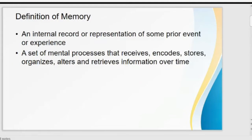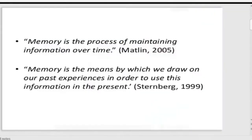First of all, what is memory? The definition of memory is an internal record or representation of some prior event or experience. Any kind of experience or event we have gone through, we keep that record in our mind — that internal record or representation we call memory. It is a set of mental processes that receives, encodes, stores, organizes, alters, and retrieves information over time.